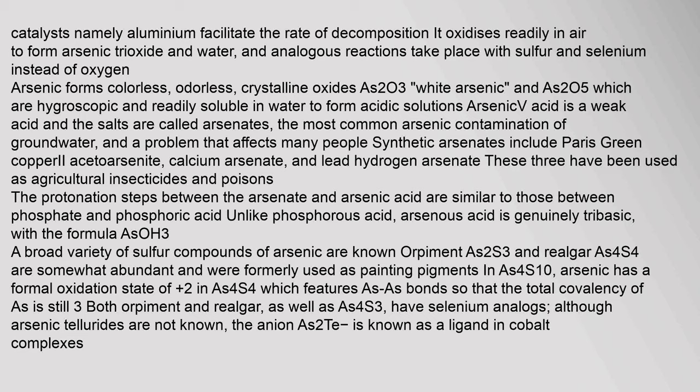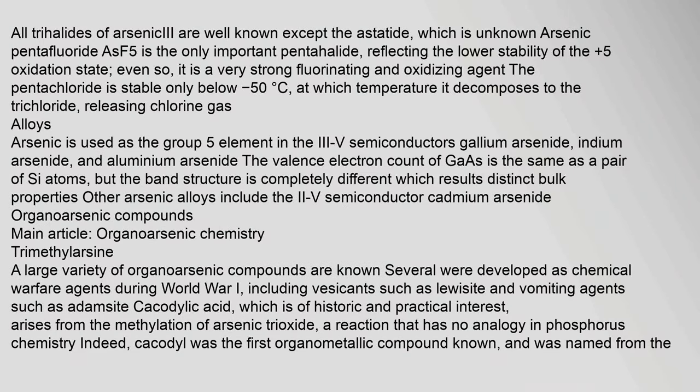A broad variety of sulfur compounds of arsenic are known. Orpiment (As2S3) and realgar (As4S4) are somewhat abundant and were formerly used as painting pigments. In As4S4, arsenic has a formal oxidation state of +2 and features As–As bonds, so that the total covalency of As is still 3. Both orpiment and realgar have selenium analogues. All trihalides of arsenic are well known except the astatide. Arsenic pentafluoride (AsF5) is the only important pentahalide, reflecting the lower stability of the +5 oxidation state, and is a very strong fluorinating and oxidizing agent.